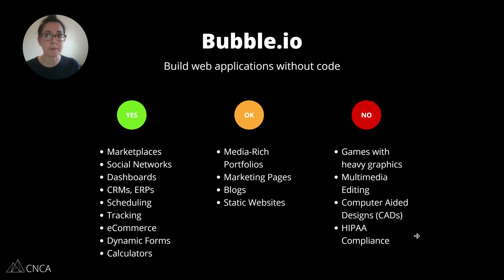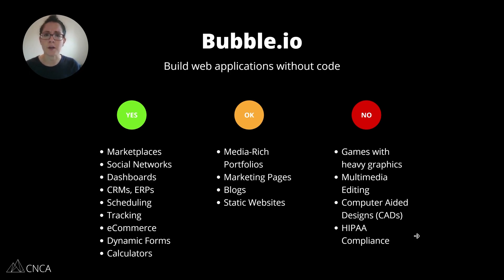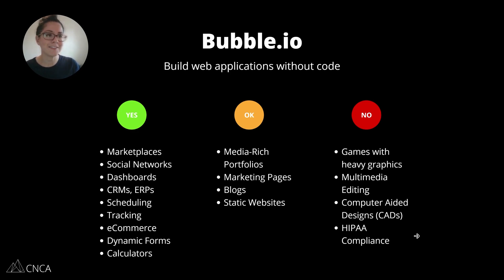Scheduling is a very popular type of functionality that can be done a number of ways. There are also a lot of plugins that can help with certain aspects of calendars and managing dates. You can do all sorts of things when it comes to creating scheduling functionality — for appointments, booking reservations, blocking out dates, creating availability, custom time slots, and all that sort of thing.